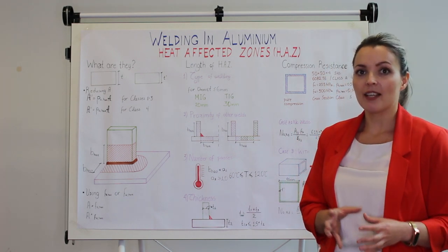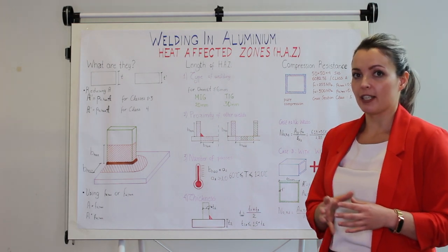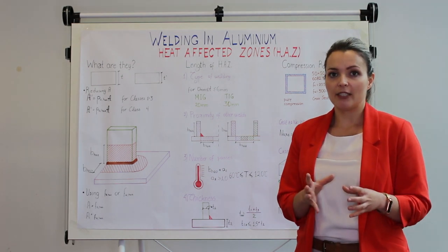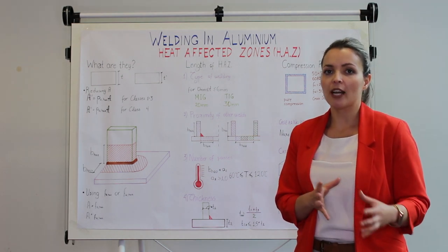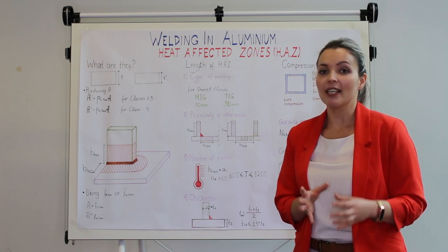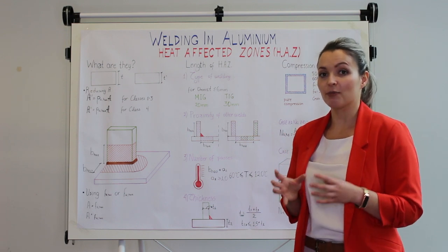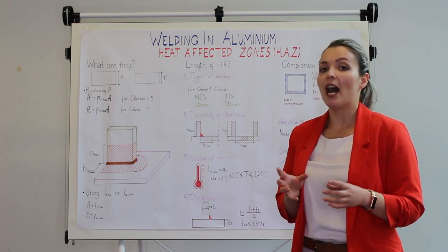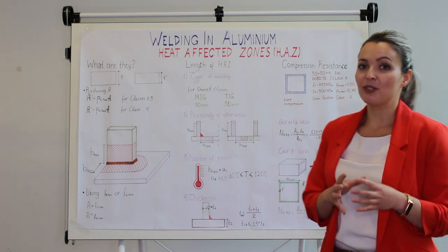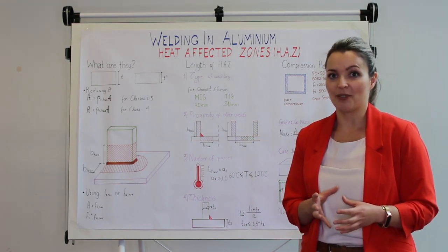Last but not least, the thickness of the two elements welded together also affects the width of the heat affected zone. If the thickness of the material is different, we will account for the average thickness, provided that this average thickness is less than 1.5 times the thickness of the smaller material. However, if this is not the case, we will have to use tests to estimate the heat affected zone.